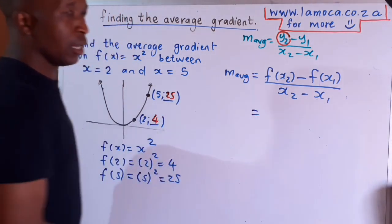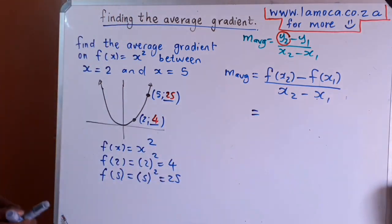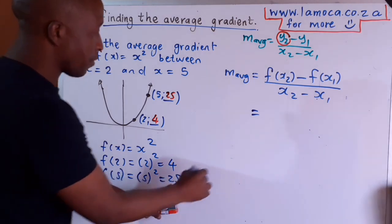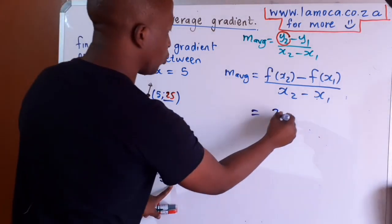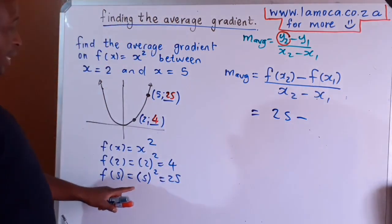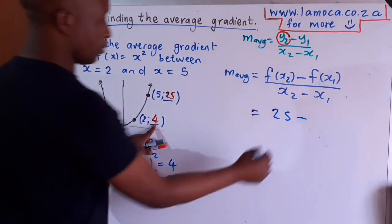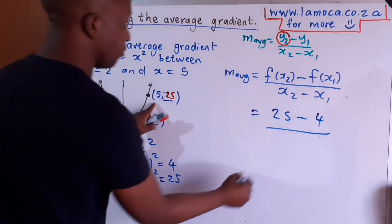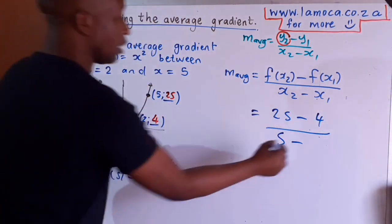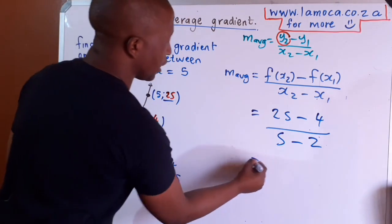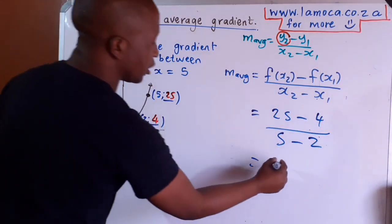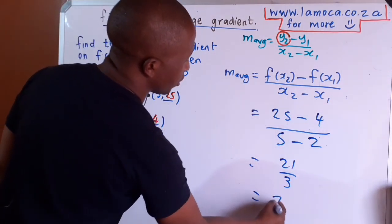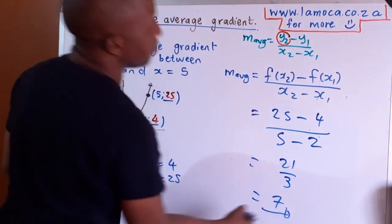This is very important — it's helping us set ourselves ready for whatever is going to happen next. Now, f of x2 is 25 minus f of x1 which is 4, divided by 5 minus 2. Simplifying: 25 minus 4 is 21, over 3, and the answer is going to be 7.